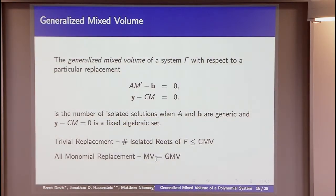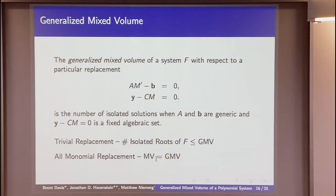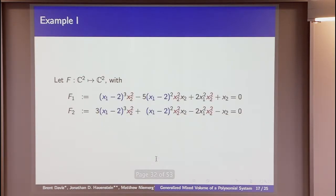We have two extreme types of replacements. The trivial replacement takes the original polynomial system and replaces each entire polynomial altogether — those are all the monomial terms with the replacement variables and the coefficient matrix. The all-monomial replacement instead replaces each individual monomial. These are the two extremes, and perhaps there's a better replacement — like our original motivating example where we just replace x1 plus 1 with y1.